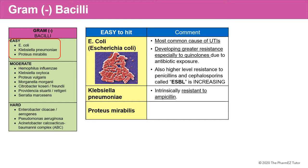E. coli is one of the most common organisms found in the environment. It's the most common cause of urinary tract infections. In the past, E. coli has been very sensitive to most antibiotics. However, due to greater antibiotic exposure, it has started to develop greater resistance, especially to quinolones. A higher level of resistance to penicillin and cephalosporins is also increasing — this is called ESBL — and the percentage is increasing.